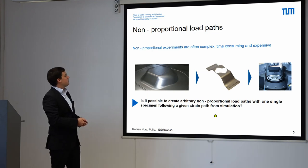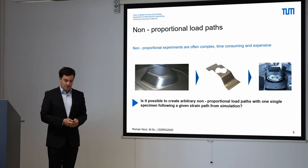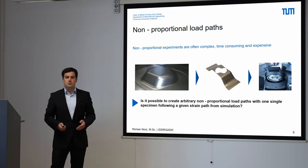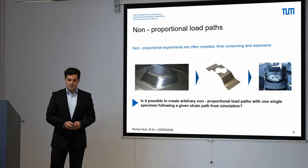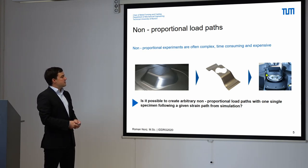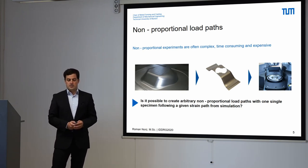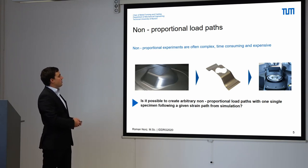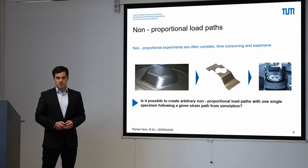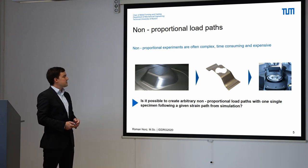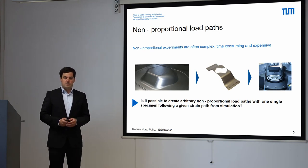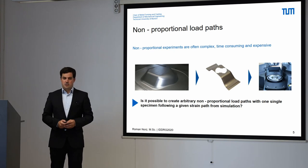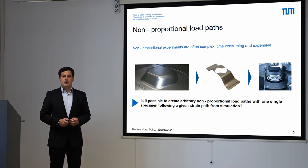As we can see here, this is one approach for non-proportional load paths we are using at our institute. We create a preformed specimen on a modified Marciniak tool on our hydraulic press. In a second step, we cut out the Nakajima specimens from those preformed specimens and subsequently test them on a Nakajima test to obtain bilinear strain path combinations. As we can see on the left hand side, we are using a lot of material to produce one single preformed Nakajima specimen. Also, we need two different machines, a big hydraulic press and the Nakajima testing equipment, two different tools, and two different optical measurement systems to calculate the strains after preforming and in the Nakajima test. That means this whole experimental setup is quite complex, time consuming, and due to the amount of material we need, quite expensive.